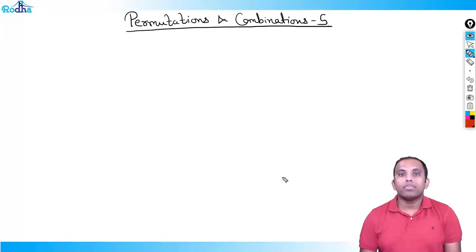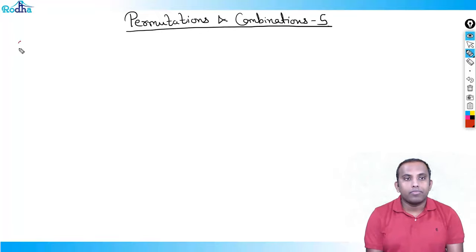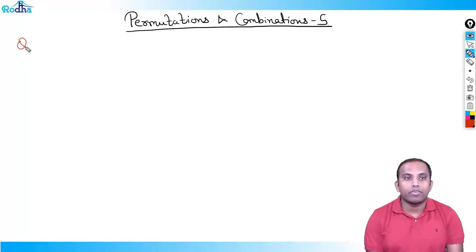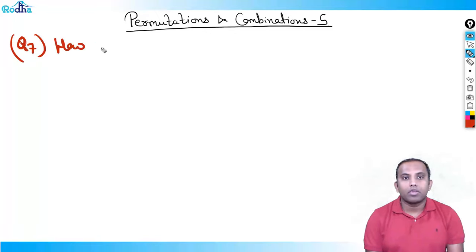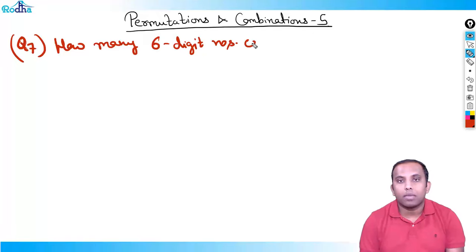Hi everyone, my name is Ravi Prakash and welcome to the fifth class of permutations and combinations. We'll continue our questions here — question number seven. Do not miss a single question or a single concept we have discussed. Every question is important. Question number seven: how many six-digit numbers can be formed from digits five, six, seven, and eight such that each digit is used at least once?